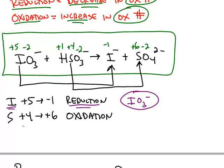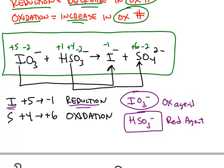Similarly, what caused the iodine to be reduced was the sulfur, but the sulfur was not found by itself. It was found in HSO3-, which is the reducing agent.